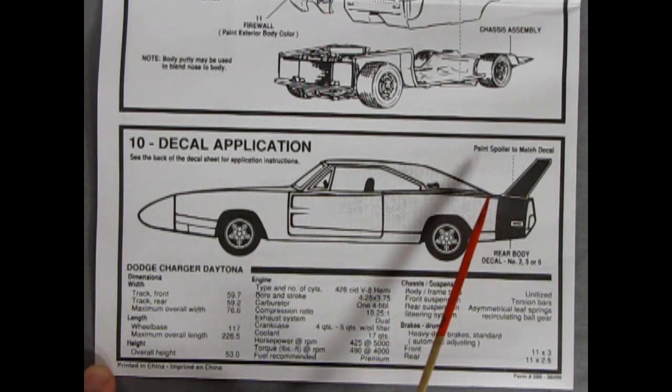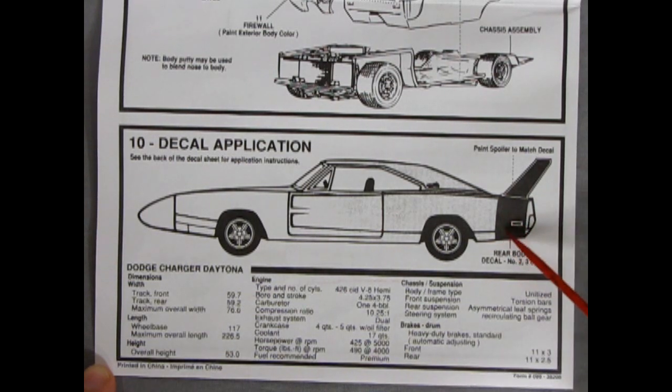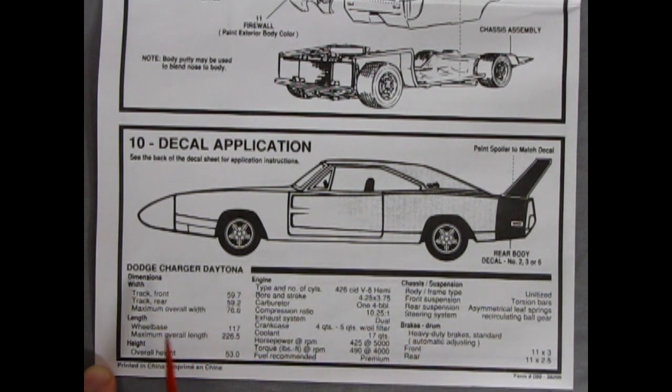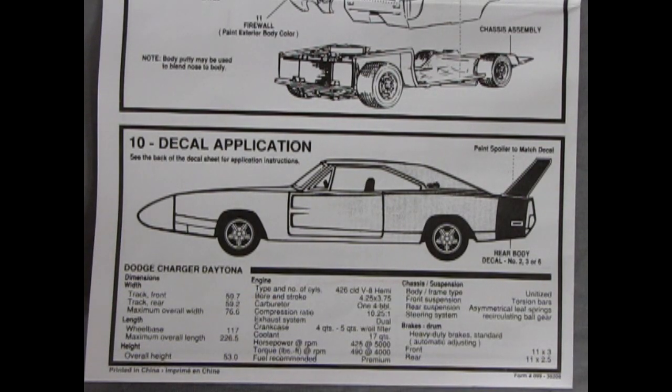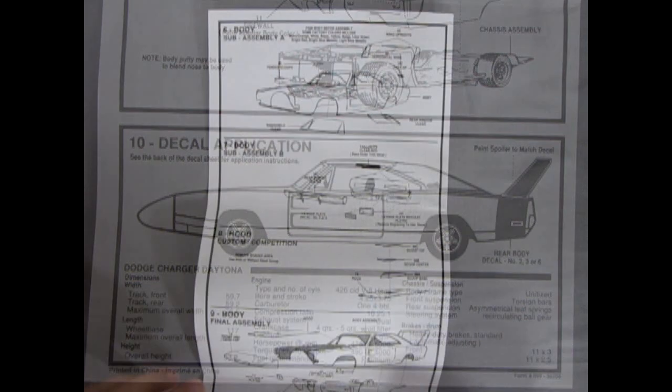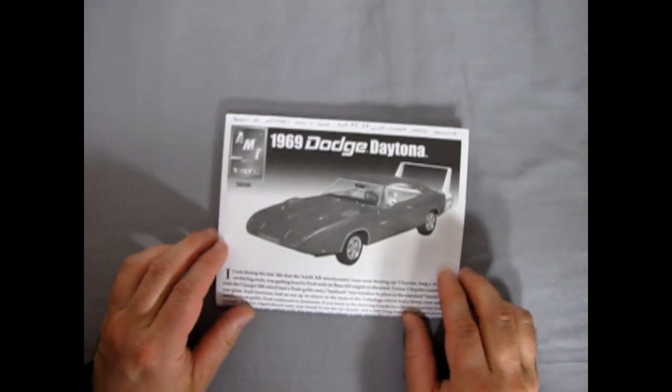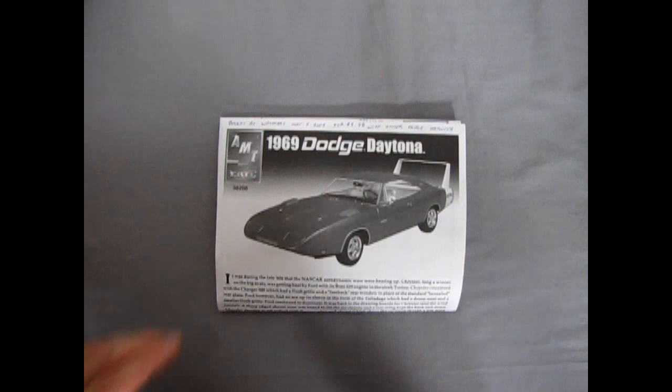Panel 10 shows our decal application. It says see the back of the decal sheet for application instructions. Of course you get the rear stripe here in three different colors and you paint your spoiler to match the decal. There's also all the statistics and information on the Dodge Charger Daytona down here such as the dimensions, the engine, the length, the height, chassis and the brakes. So quite a lot to read and inform yourself of the Daytona. And that completes our look at the Dodge Daytona instruction sheet. So now we will take a look at the plastic parts.